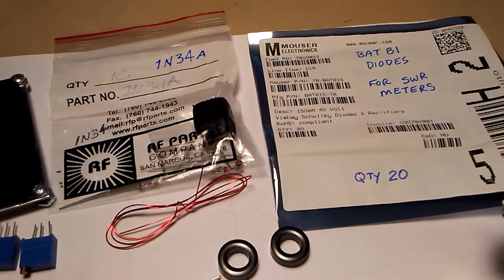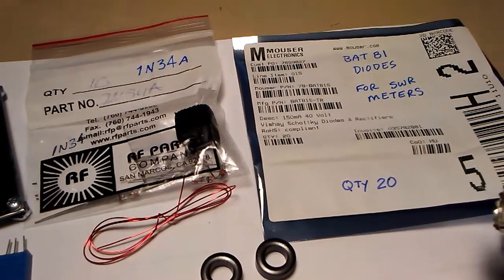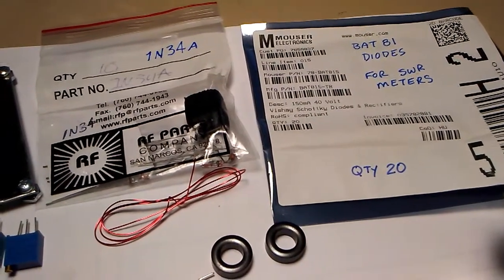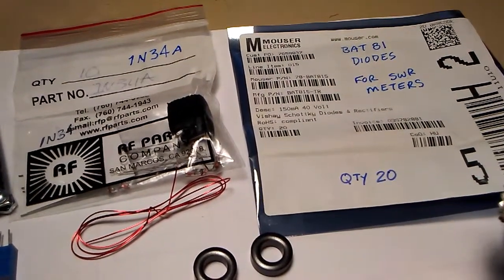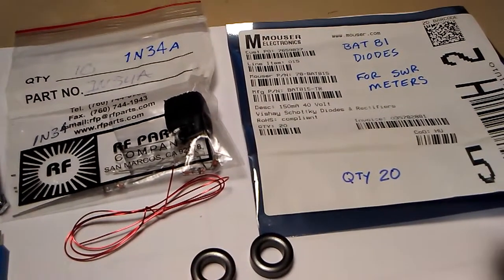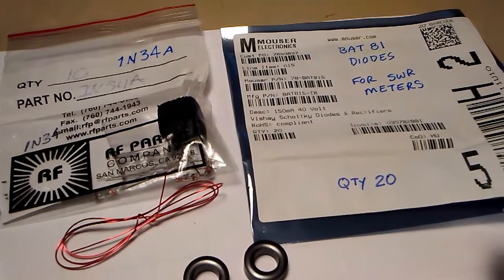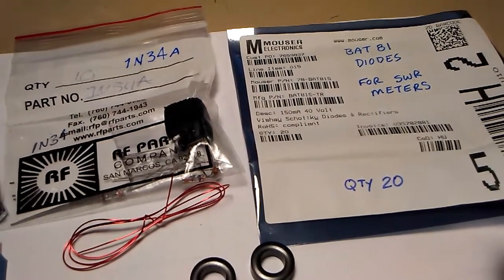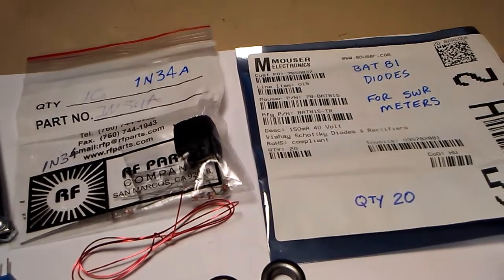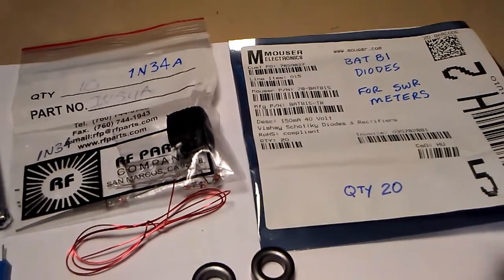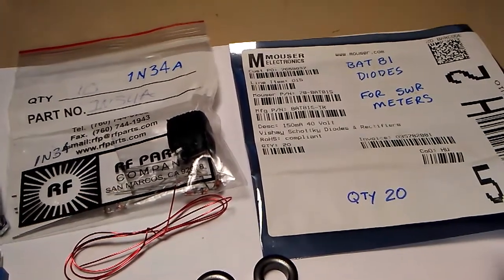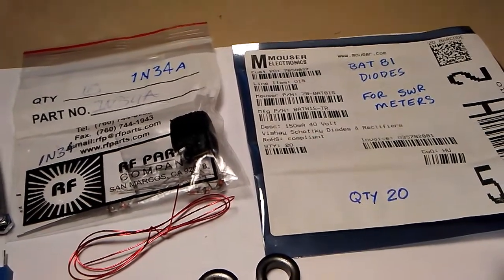I have both 1N34A and BAT81 diodes. I want to try each one of these to see if there's a difference. I'll probably try generic switching diodes too to see if it's even usable as an experiment. But when I'm done, I'll probably leave one of these two types in the finished product.